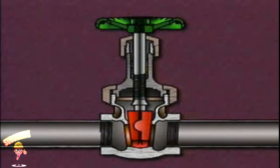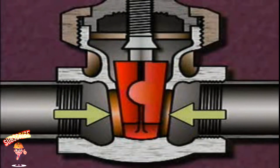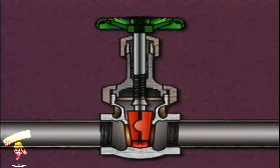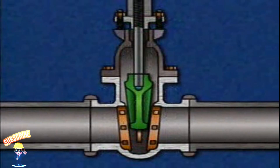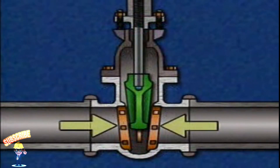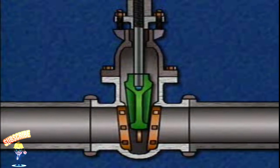Small gate valves generally have fixed seats that are cast as part of the valve body. It's more economical just to replace these valves than to repair them when they're worn or damaged. Large gate valves, however, frequently have replaceable seats. With these types of valves, it's less expensive to replace the seat than the entire valve.